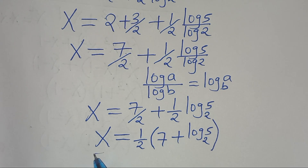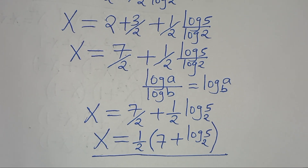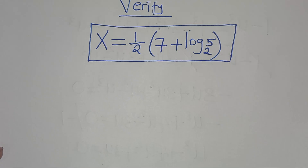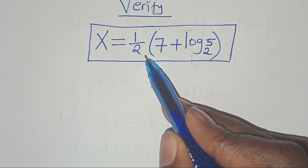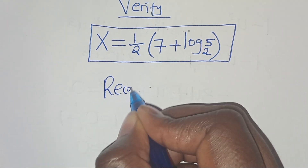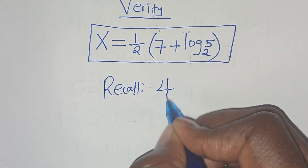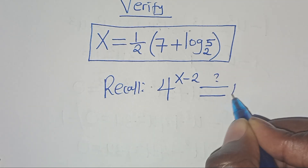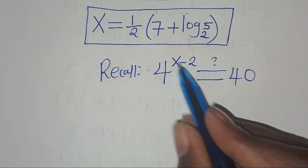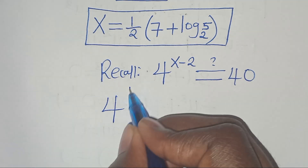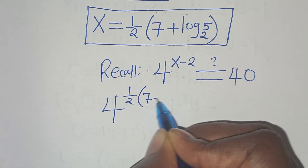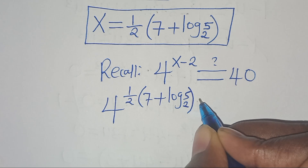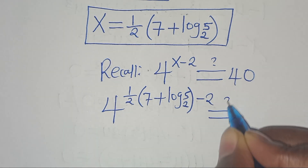This is the value of x. The next step is to verify that this value of x satisfies the original equation. Recall the equation is 4^(x−2) = 40. Substituting x, we have 4 to the power of one-half times (7 + log₂5), minus 2, which should give us 40.